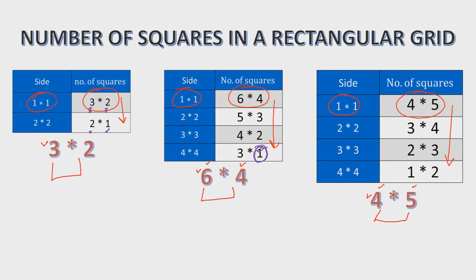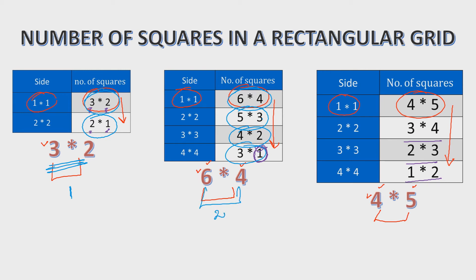In the third case also, 4 by 5 becomes 3 by 4, then 2 by 3, then 1 by 2. One more important observation: the difference between these two numbers always remains constant. In the first case the difference is 1, matching the difference between the sides of the rectangle. In the second case, 5 minus 3 is 2, 4 minus 2 is 2, 3 minus 1 is 2 — and the difference of 6 and 4 is also 2. In the third case, the difference is always 1 unit throughout.